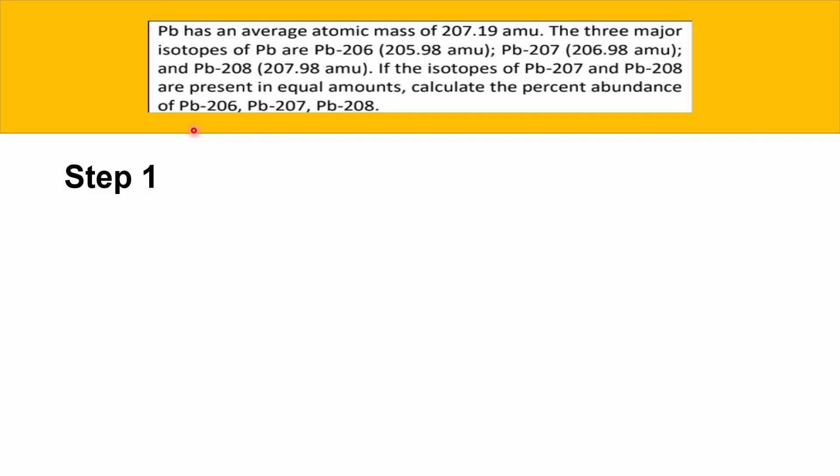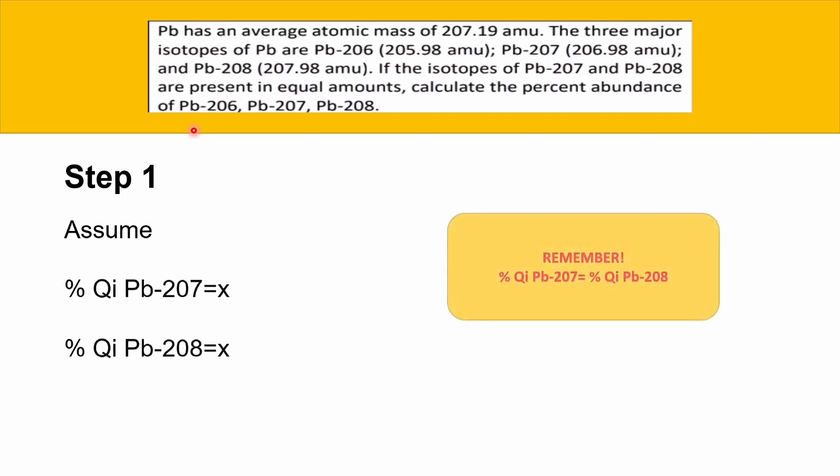The first step is we need to assume — this is the most important step. If not, all your other workings will be quite useless. Assume that the isotopic abundance for Plumbum-207 is equal to x. Then you can also assume that the isotopic abundance for Plumbum-208 is also equal to x.